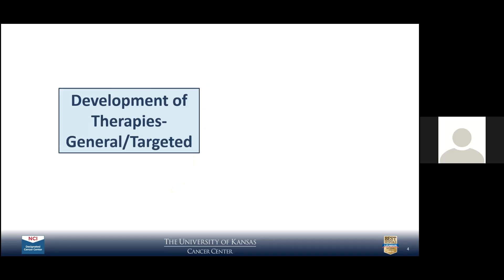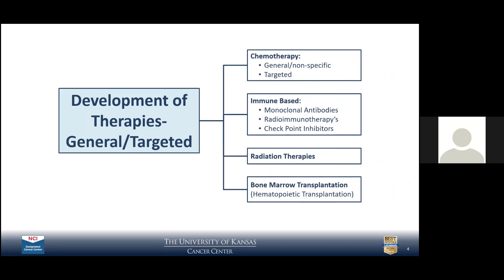As far as the development of therapies, there have been significant advances in chemotherapy — non-specific type therapies — and then more recently, the development of targeted therapies. One of the major ones in the hematological sphere has been in CML, and Dr. Yacoub is going to give us an update in that arena. There has also been advancement in the use of monoclonal antibody type therapies, including radioimmunotherapy — radiolabeling monoclonal antibodies with specific radiation type treatments targeted to the disease.